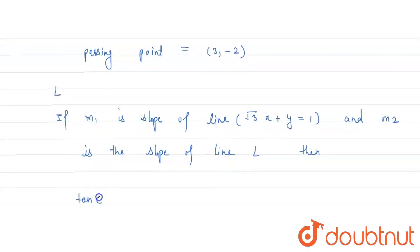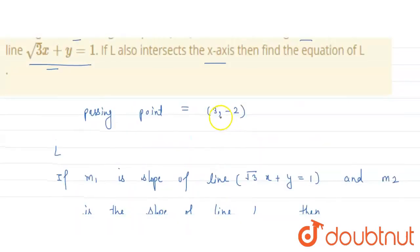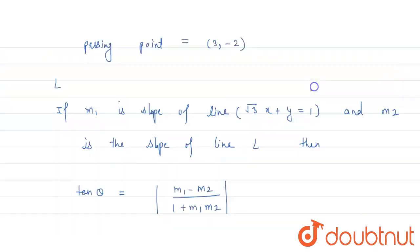tan θ equals modulus of m1 minus m2 upon 1 plus m1 m2. Now, what is θ? θ is 60 degrees. This is given.